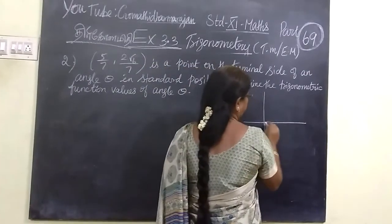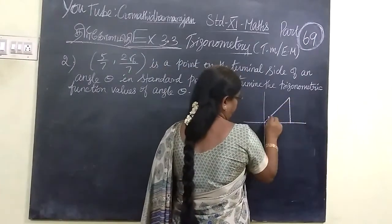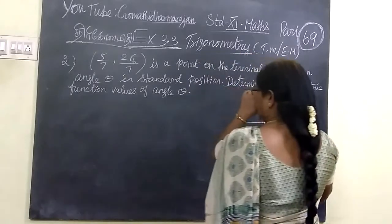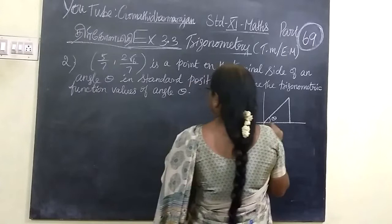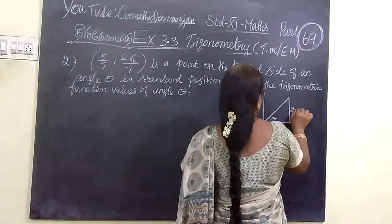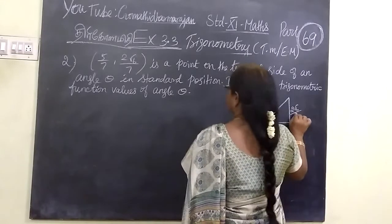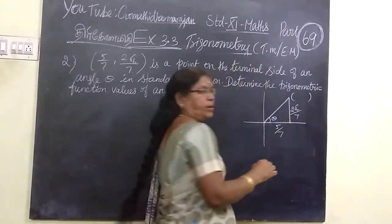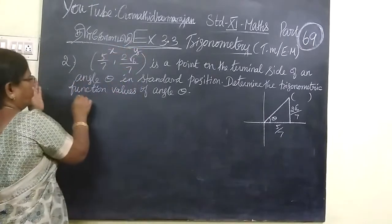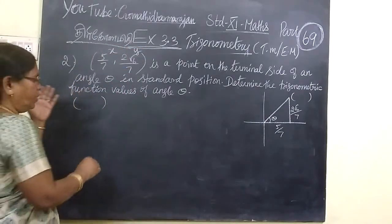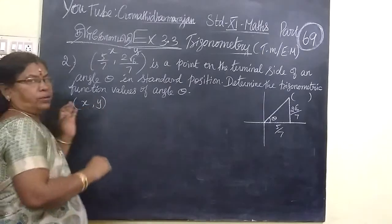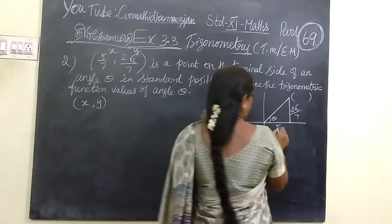It is a point on the terminal side. The point is 5 by 7, then 2 root 6 by 7. This is the X coordinate and this one is Y coordinate. First is X and second one is Y. So, this is X and this is Y.